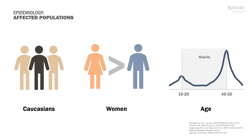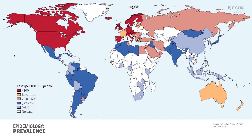This is the famous geographic gradient. The disease is very uncommon around the equator, but prevalence goes up as you move north or south. For example, MS prevalence in the northern United States and Canada is higher than in Texas. However, genetics plays a very important role, and for some reason MS is not as common in Asia — India, China, and Japan.